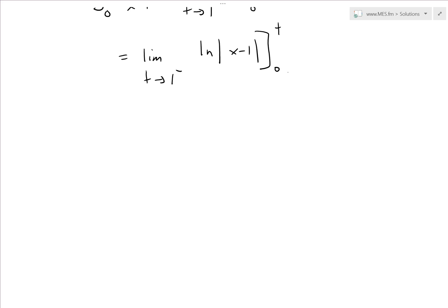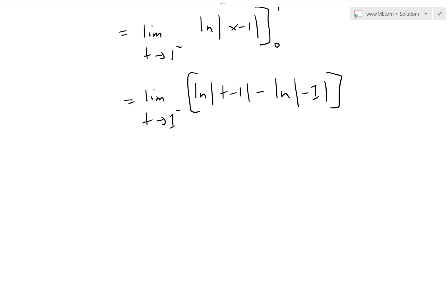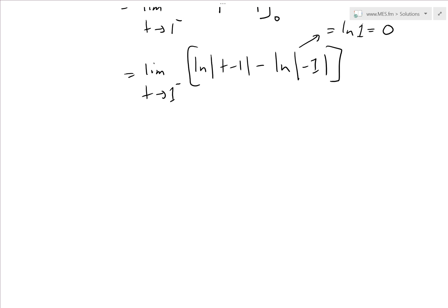Evaluating this, we get the limit as t approaches 1 from the left of ln|t minus 1| minus ln|0 minus 1|. The absolute value of negative 1 is 1, and ln(1) equals 0, so that term cancels out. We're left with the limit as t approaches 1 from the left of ln|t minus 1|. To handle the absolute value, recall that as t approaches 1 from the left, t minus 1 is negative, so |t minus 1| equals 1 minus t.